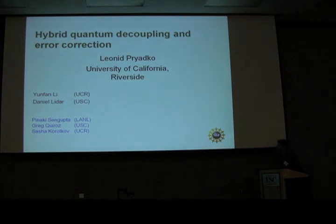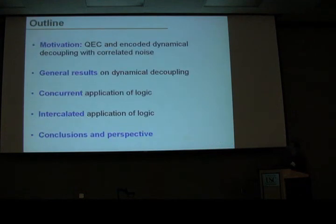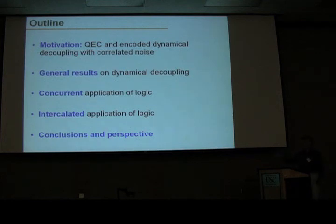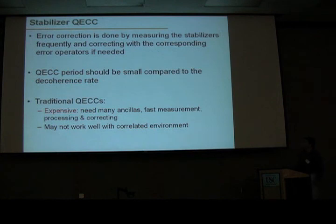What I'm going to talk about is basically what happens if you try to combine dynamical decoupling with error correction. First I'll show you why this may be necessary, then talk a little bit about some general results on dynamical decoupling — describe what you may expect depending on the order, the rate, et cetera — and then look at two different ways of combining these two algorithms. I'll be talking exclusively about stabilizer quantum error correcting codes.